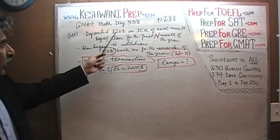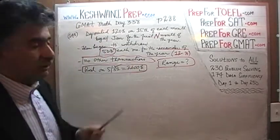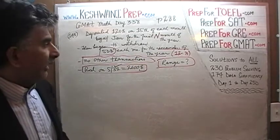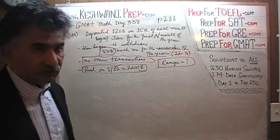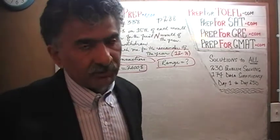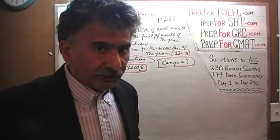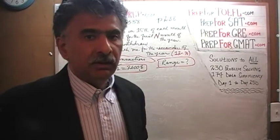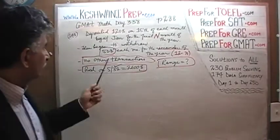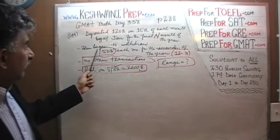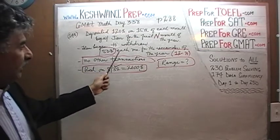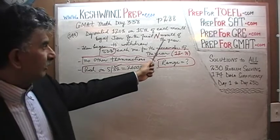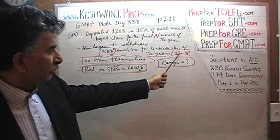We are told that we are going to deposit $120 on the 15th of each month, beginning with January, for n number of months. We are not told how many months, just some months in the year. After that period, having made the deposit of $120 on the 15th of every month, at some point in the year we make a switch to withdrawing. We begin to withdraw $50 each month on the 15th of the month for the remainder of the year. Since we made a deposit for n months, the remainder of the year would be 12 minus n months.